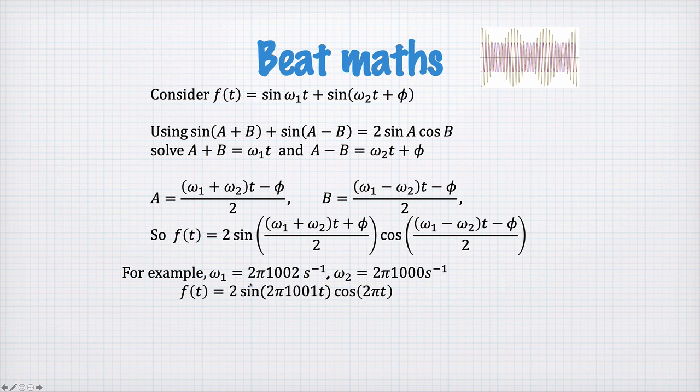And this is because this sine function here has a frequency which is the average of ω₁ and ω₂. You can see ω₁ + ω₂ divided by 2, which gives us the average of these frequencies. Whereas the cosine here has got a frequency of half the difference, ω₁ - ω₂ divided by 2.